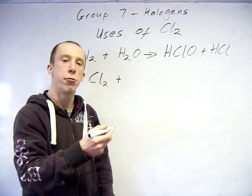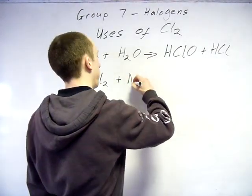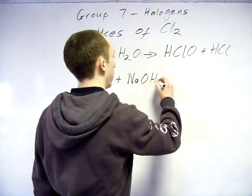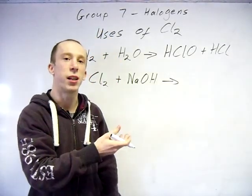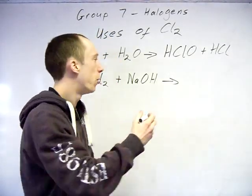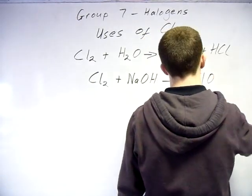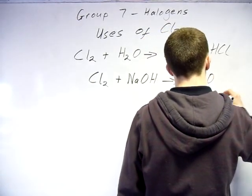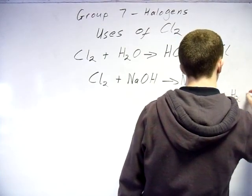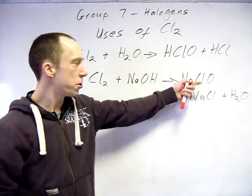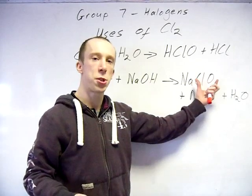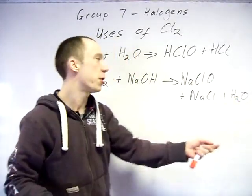You can instead react chlorine with a base. So it can be any alkalised sodium hydroxide, it's the common one. So you get two salts. You get your sodium chlorate, your sodium chloride and some water as well.